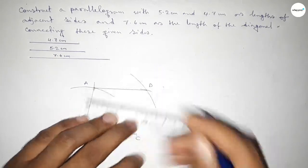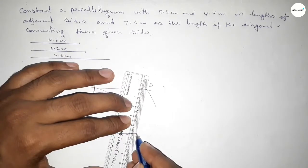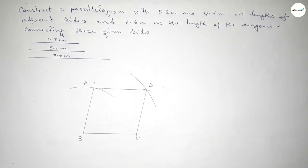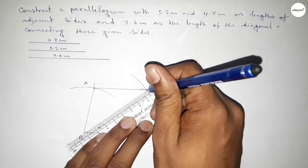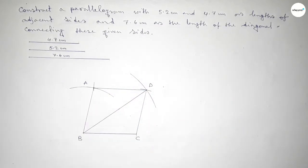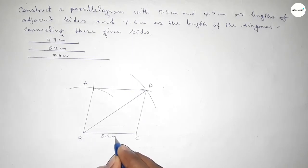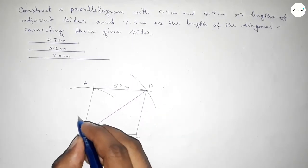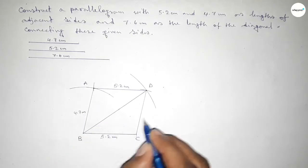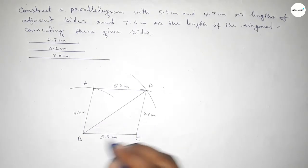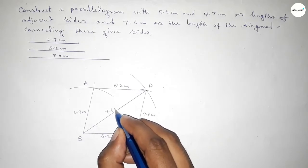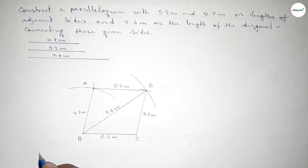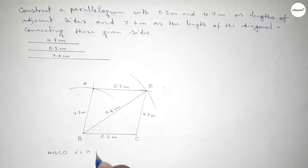First joining A and B, then joining A and D, then joining C and D. And joining the diagonal BD. So this is the parallelogram. This side is 5.2 centimeter and the opposite side is equal at 5.2 centimeter. This side is 4.7 centimeter and the opposite is equal at 4.7 centimeter. And the diagonal is 7.6 centimeter.